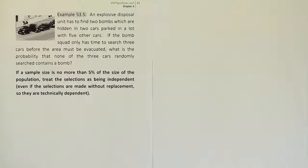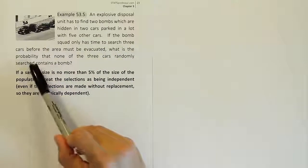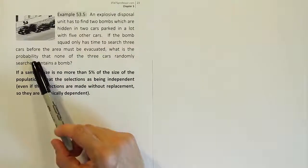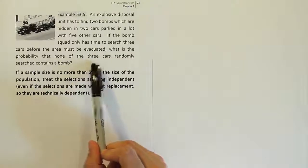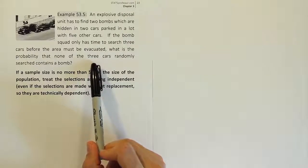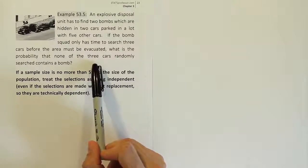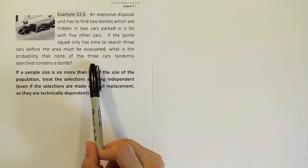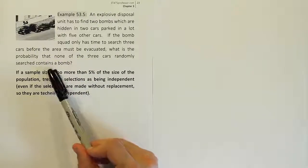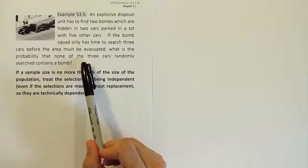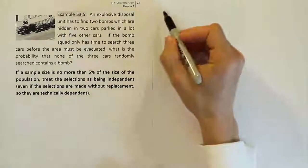When I look at this problem, the first thing I need to do is identify what kind of problem I'm dealing with. It asks for the probability, so it's clearly a probability problem. It talks about three cars being randomly searched — that's three separate events. Each search is an event, and there are three searches. Anytime you have more than one event, you're going to have to multiply, so this is the multiplication rule of probability.